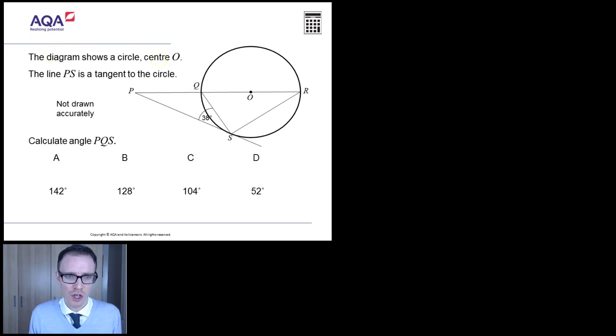Right, the diagram shows a circle with center O. Okay, I'm happy with that bit. The line PS is a tangent to the circle. Now that's going to be important, and immediately your mind should start to think, what do I know about tangents when it comes to circle theorems?